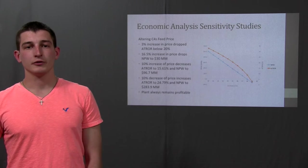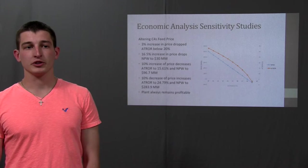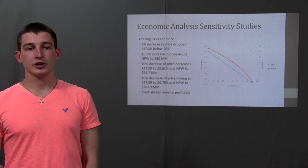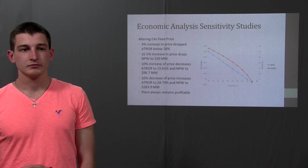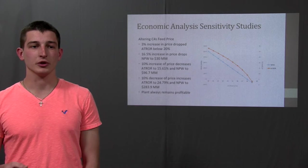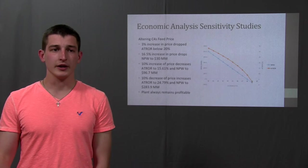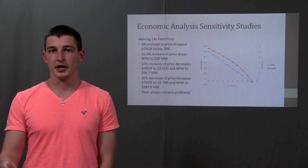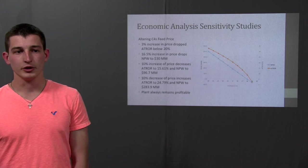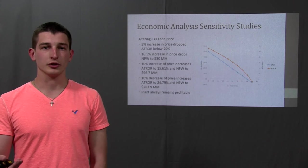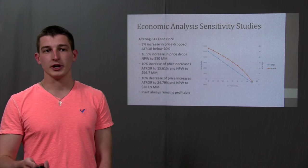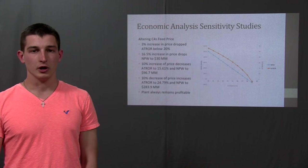Again, we altered the C4's feed coming into the process. If the price dropped 3%, then we would again go below the ATRO of 20%. A 16.5% increase in price of the C4's feed showed that the price would drop to a net present worth of 30 million. And on the other hand again, a 10% increase of price decreased the ATRO to 15.61% and a net present worth of 96.7 million. And then if C4's feed then decreased by 10%, we'd begin making more money as expected, reaching an ATRO of 24.79% and a net present worth of 283.9 million. This kind of just shows that even with the fluctuation of the price of C4's coming into the plant, going from a 10% increase or 10% decrease, the plant will always remain profitable. The ATRO value will go up and down a little below the 20%, but we'd always be above the net present worth.